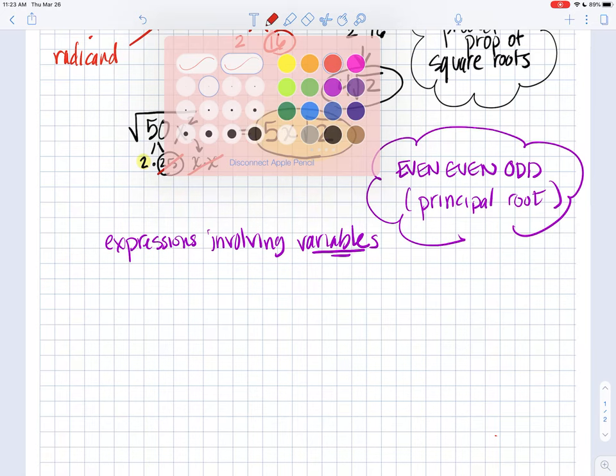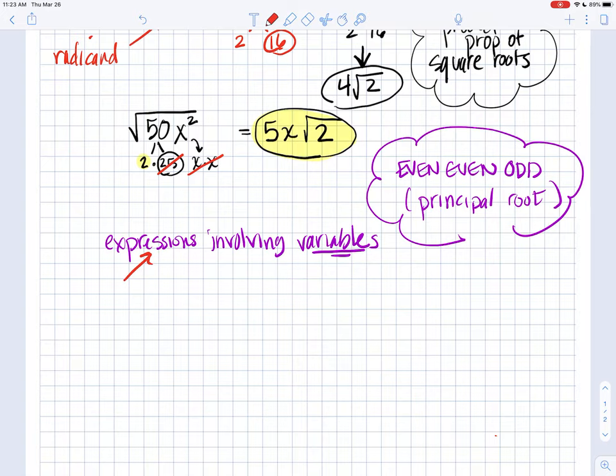But when we have expressions involving variables, we have this rule called the even-even-odd rule. And that has to do with the fact that when we're simplifying radical expressions, we really are just looking for the principal root. And when we have variables, we have to be precise in our final answer.